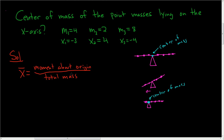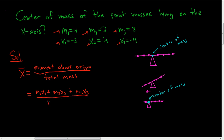The moment about the origin is the tendency of the system to rotate about the origin. Let me go ahead and write the formula down. So it's m1 times x1, plus m2 times x2, plus m3 times x3, and then we divide by the total mass of the system, so m1 plus m2 plus m3.